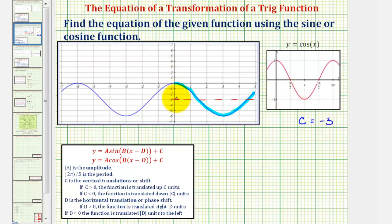Notice the distance from the midline to a maximum is three units, as well as the distance from the midline to a minimum, so the amplitude is positive three.